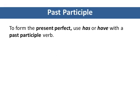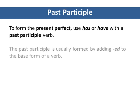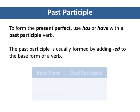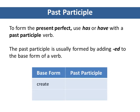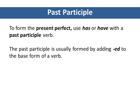To form the present perfect, use has or have with a past participle verb. The past participle is usually formed by adding -ed to the base form of a verb. For example, create becomes created, and learn becomes learned. So the present perfect would be: he has created, or they have learned.